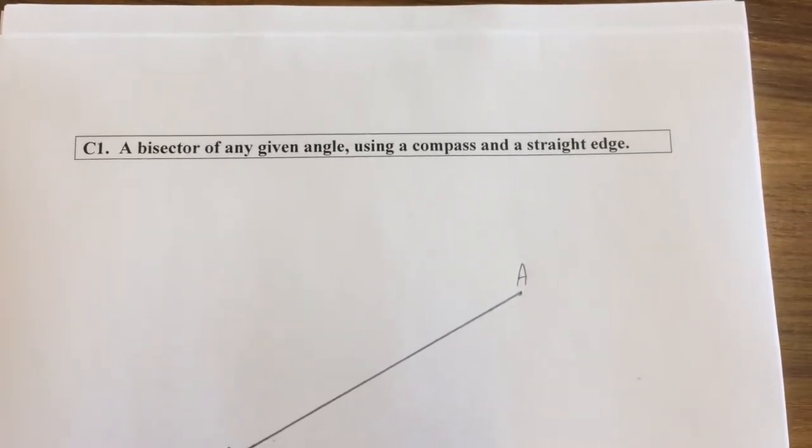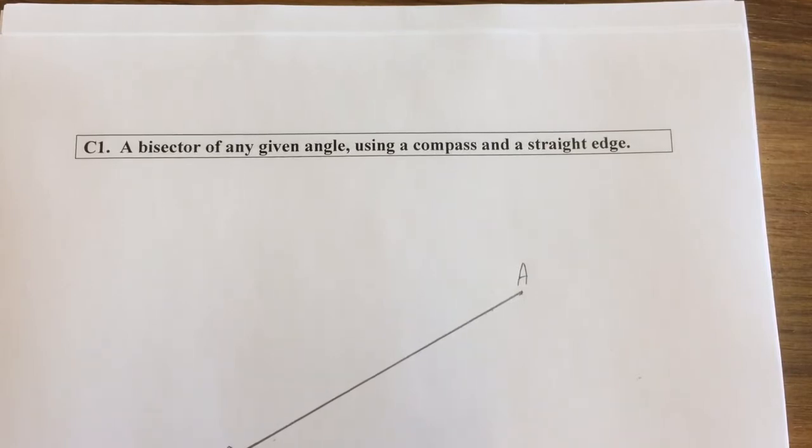Here's construction number one: how to get the bisector of an angle A or B using just a compass and a straight edge.